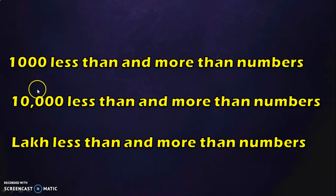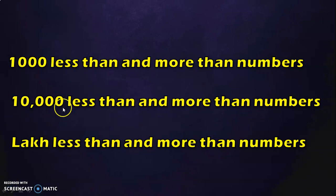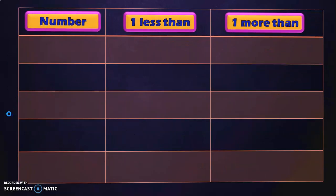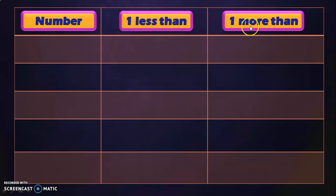Next, let us move on to the topic: 1000 less than and more than numbers, 10,000 less than and more than numbers, and lakh less than and more than numbers. If you remember in class 3, we dealt with 1 less than and more than, 10 less than and more than, 100 less than and more than, and also 1000 less than and more than numbers, because in class 3 we were dealing with only 4 digit numbers. Now in class 4, we will also see 10,000 and lakh less than and more than, as well as a quick revision of 1 less than and more than for 5 and 6 digit numbers.